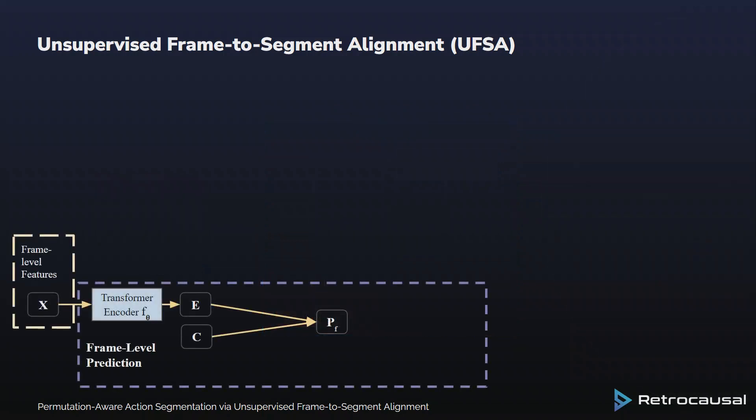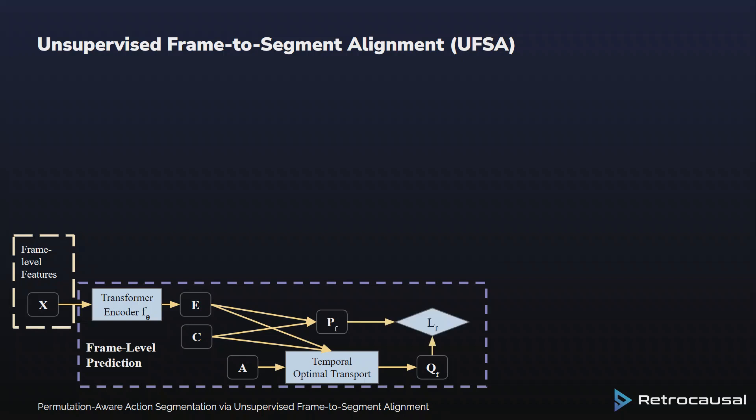For training, we pass frame-level features and prototype vectors to the transformer encoder, which yields the encoder feature E. We also learn a set of prototype vectors C, which act as the cluster centroids. We compute the probability of each frame belonging to a particular cluster by computing the similarity between encoder features and prototype vectors. We also pass frame-level features and prototype vectors to a temporal optimal transport module to get pseudo-label cluster assignments. This temporal optimal transport module assumes a fixed order of actions. We use the cross-entropy loss to minimize the difference between pseudo-label cluster assignments and the predicted cluster assignments.